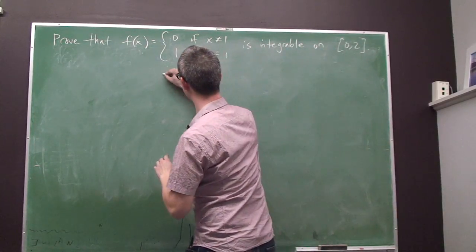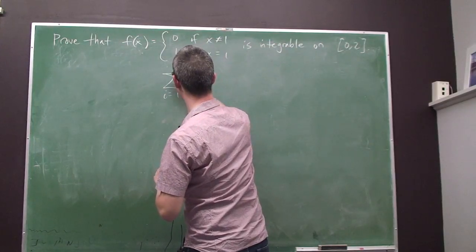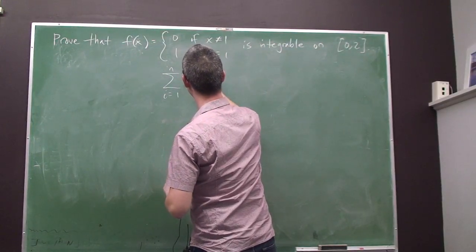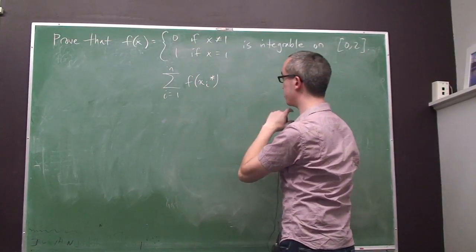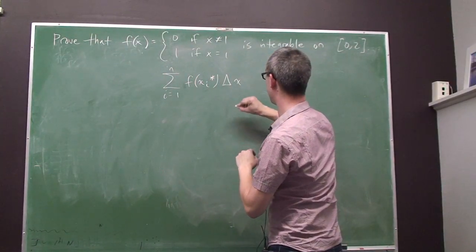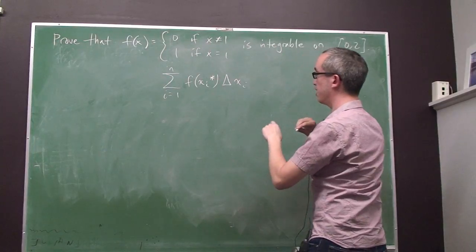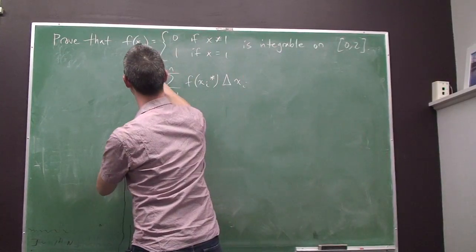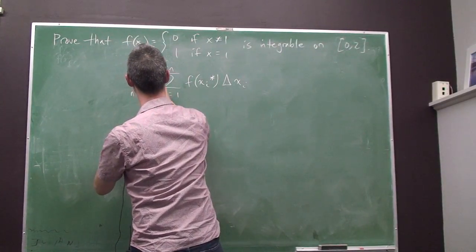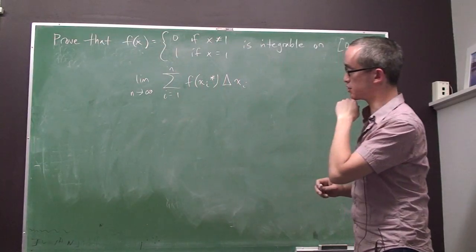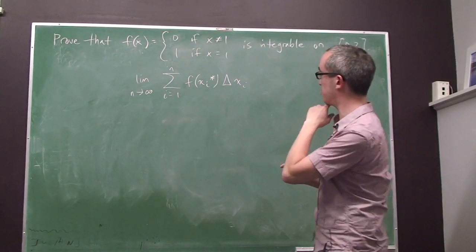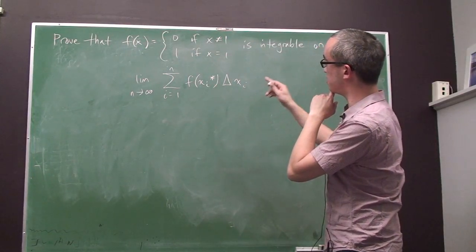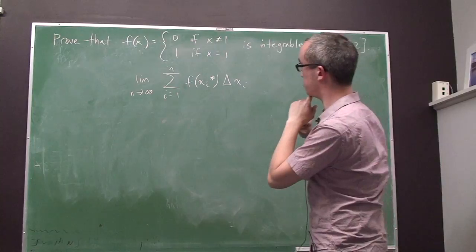And then we look at this Riemann sum. We look at the sum from 1 to n of the height of the function, taken at any sample point inside each of the subintervals, multiplied by the width of the subintervals. If we take the limit of this as n approaches infinity, as the number of subintervals approaches infinity, or equivalently as the size of the width of the subintervals gets smaller and smaller, we need to show that this limit exists and is unique.